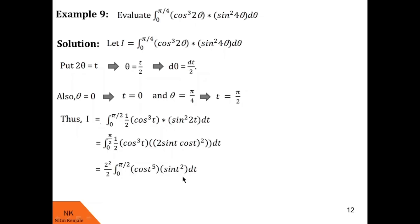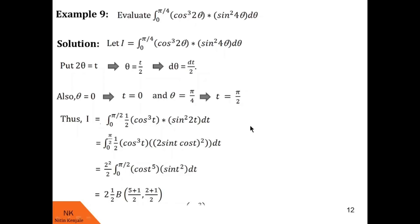By the second form of the beta function, the value of this integral is (1/2) · beta((p+1)/2, (q+1)/2) with p = 2 and q = 5. So we have 2 · (1/2) · beta(6/2, 3/2) = beta(3, 3/2) as the value of the given integral.